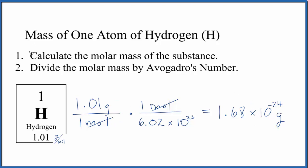If you wanted to know the mass of one atom of hydrogen in kilograms, you would divide this number by 1,000. That would give you 1.68 times 10 to the negative 27.